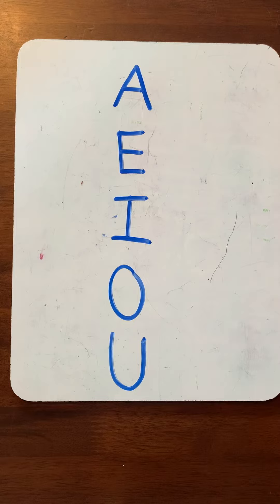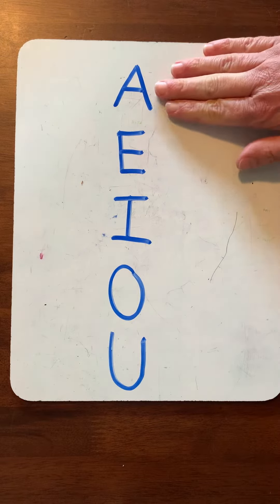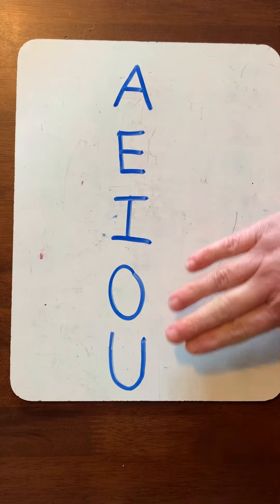So let's talk about the sounds that these vowels make. The vowels, remember, are A, E, I, O, U.